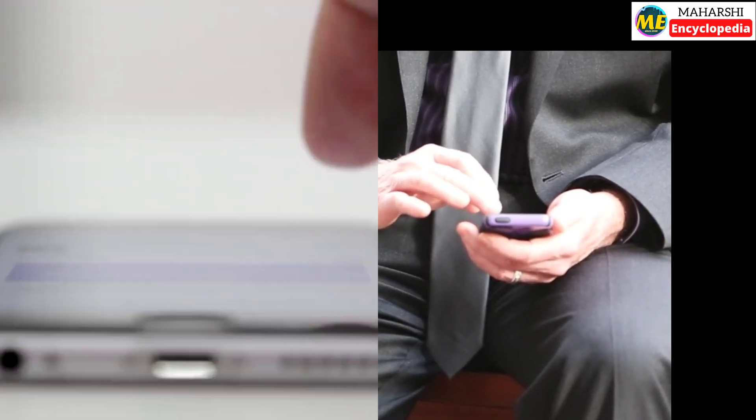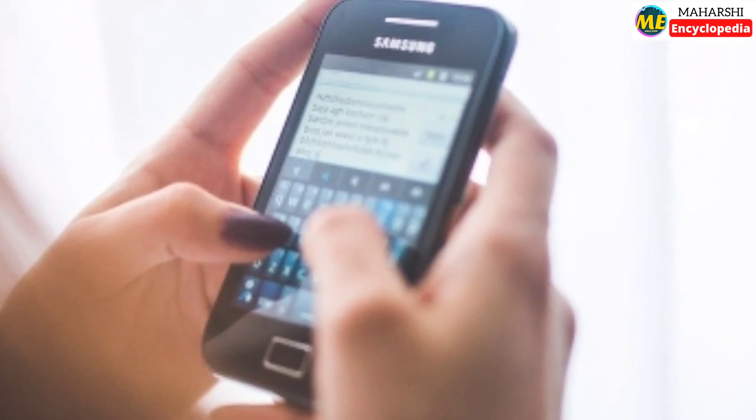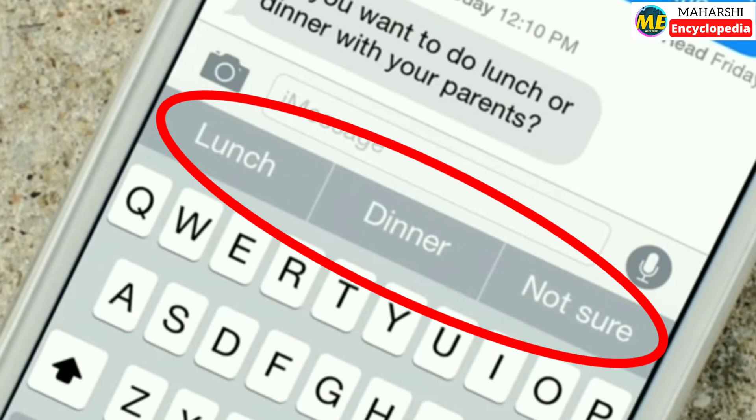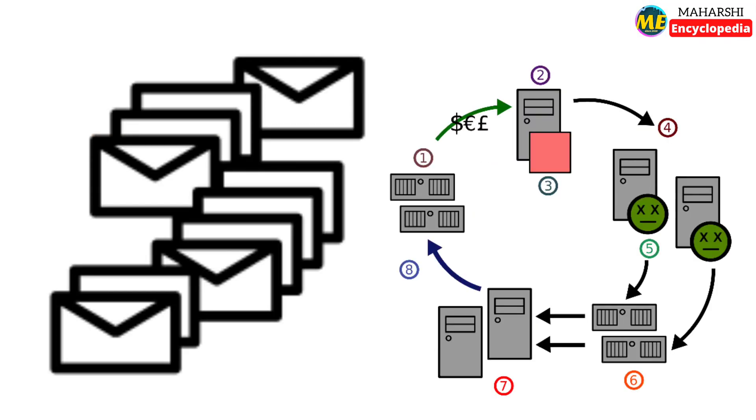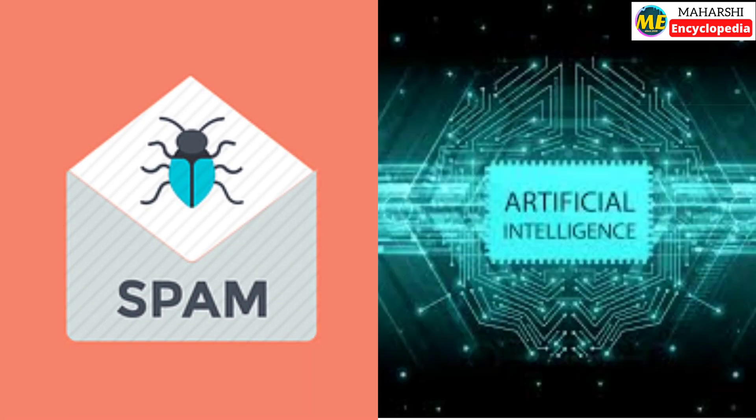We use AI every day without even realizing it. For example, when we type something on the phone it automatically suggests the word to type later. It's also a kind of small AI. To understand which of the mails coming to our inbox may be spam mails and separate them—it is also a type of AI.